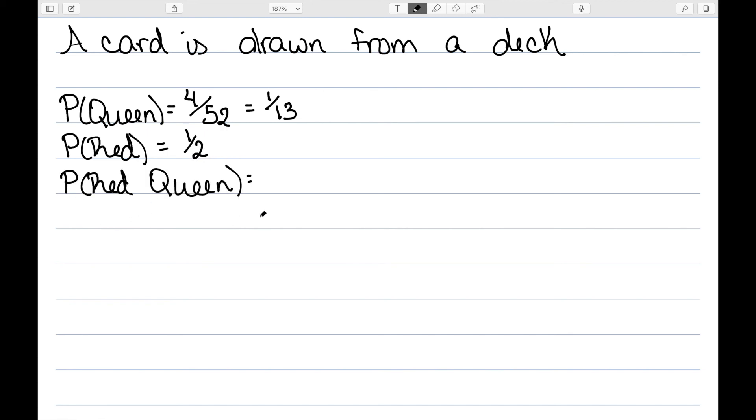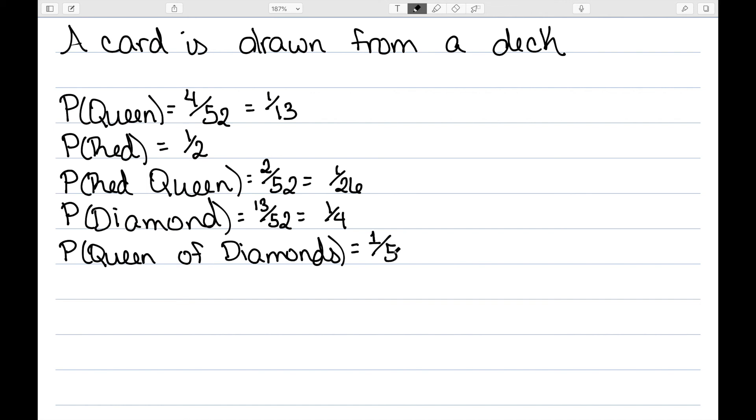What about the probability of a red queen? Well, now we have two red queens in the deck. There are four queens total, two are black and two are red, out of 52, or one out of 26. The probability of a diamond: we may know that there are 13 diamonds out of 52 cards, or that diamonds represent a quarter of the cards, since there are four suits that are evenly distributed, so one-fourth. Finally, the probability of the queen of diamonds. There is one queen of diamonds out of a total of 52 cards.